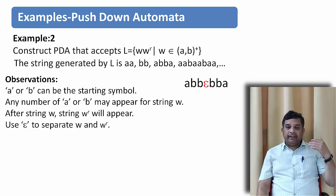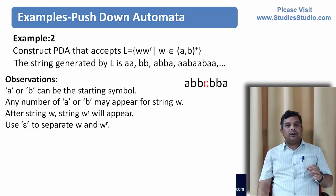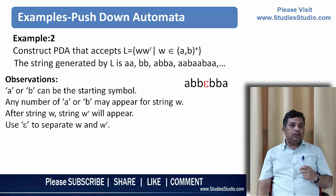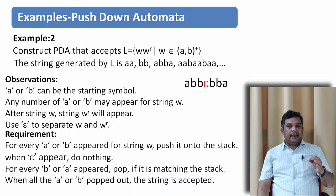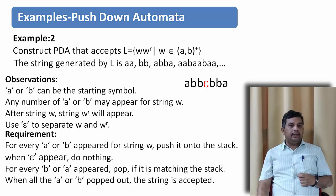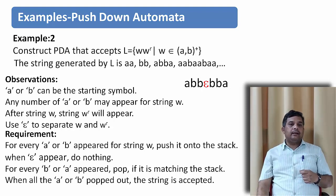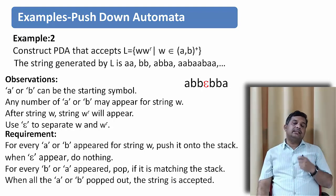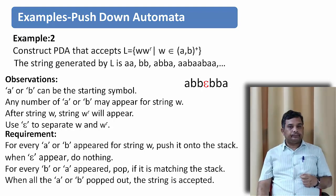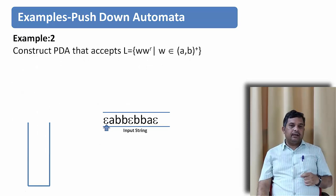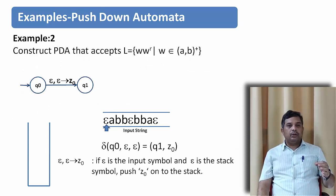So instead of having a b b b a, we represent it as a b b ε b b a. The same approach applies: for every a or b in W we push it, for epsilon we do nothing, and whenever b or a appears matching the top of the stack we pop it. When all symbols are popped the string is accepted. When epsilon appears at the start, we go from state Q0 to Q1 and push Z0 onto the stack.